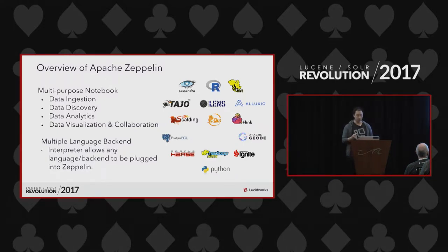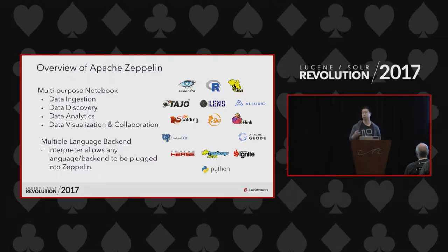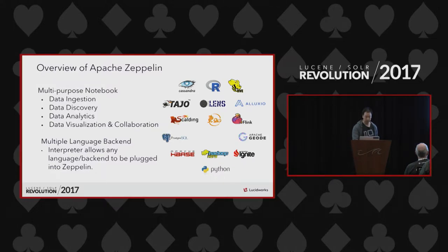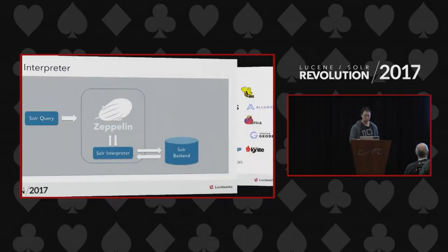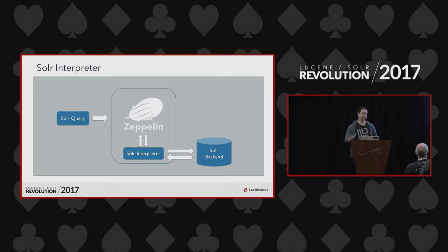The main component that allows Zeppelin to support all these backends and languages is the interpreter. So if you need to support your own language, you have to develop your own interpreter and then use it in Zeppelin. I can show you a simple high-level diagram of how we built a Solr interpreter to work with Zeppelin.